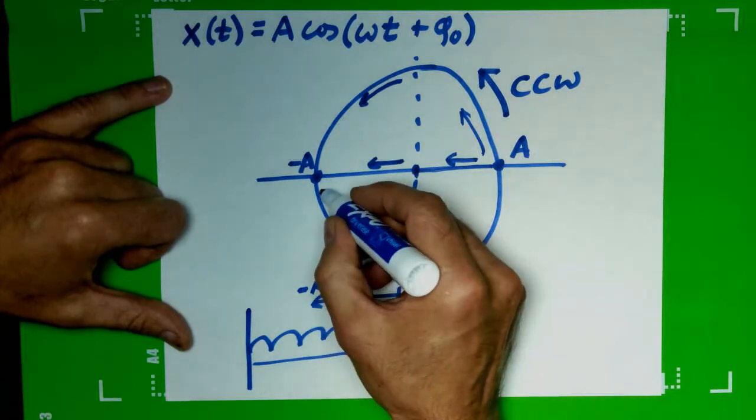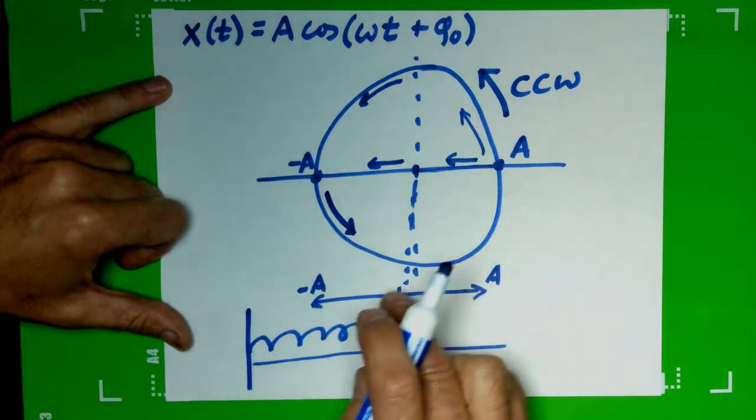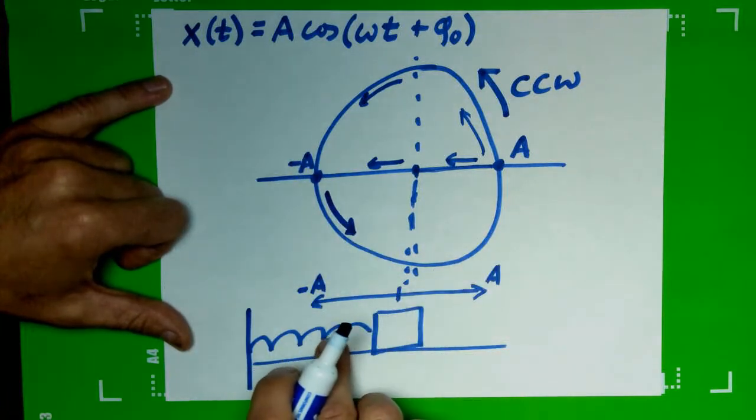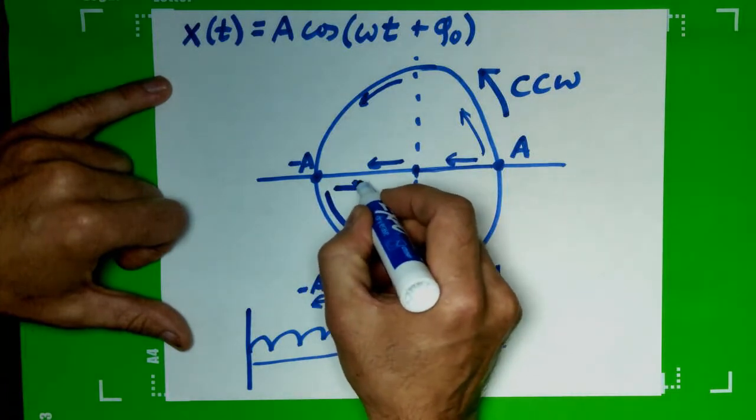and it's going to start to go, continuing counterclockwise. So as it's totally compressed, that means it's going to be pushed back towards equilibrium. So now we're getting our horizontal motion back this way. And as it gets to zero,